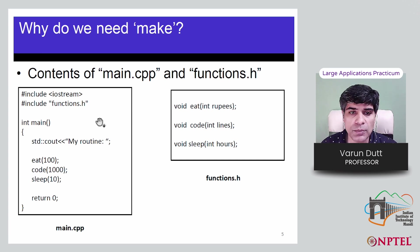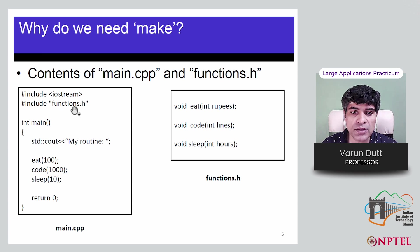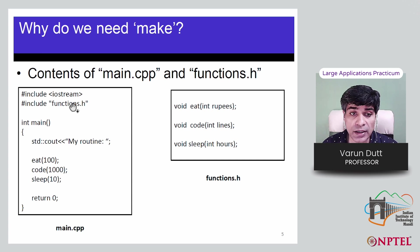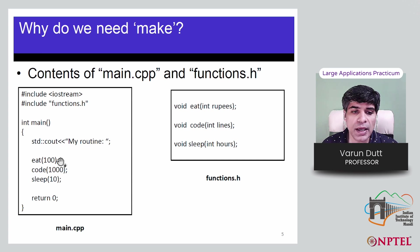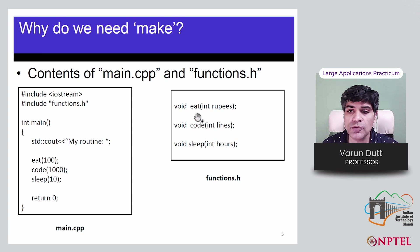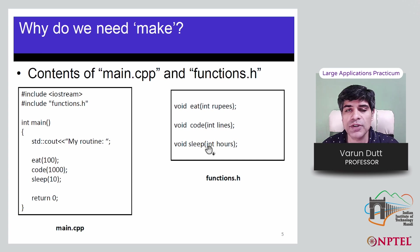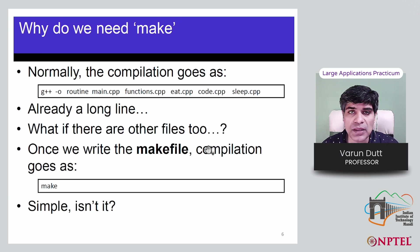For example, main.cpp includes iostream.h for input/output and functions.h header file. These include statements bring in the ability to input and output, as well as the declarations of the functions. There is a cout statement which prints 'my routine', then eat, code, and sleep are called one by one. It returns zero because it has return type int. In functions.h we have the function declarations for eat, code, and sleep.